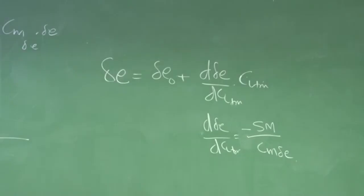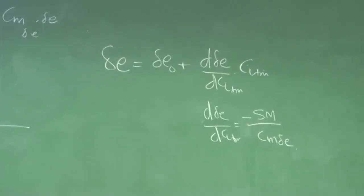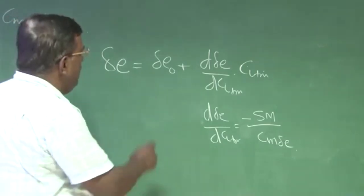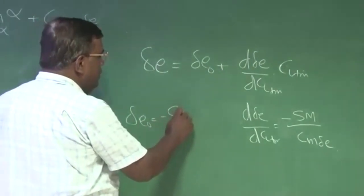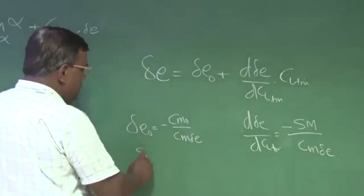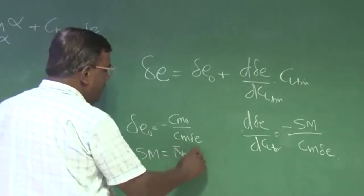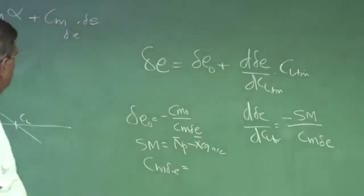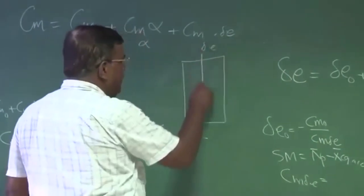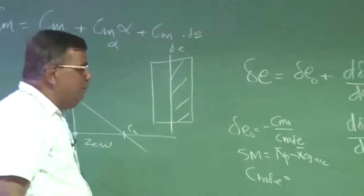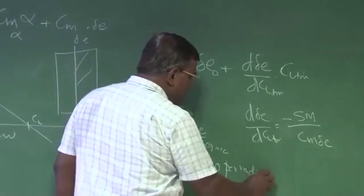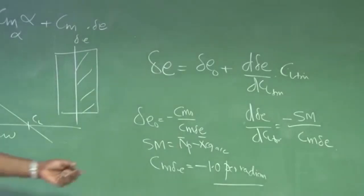Where d delta E by dCL trim is nothing but minus static margin by CM delta E. This is a linear graph with assumptions which are well known. You must refer to my class on aircraft stability and control, but this linear variation is quite good in terms of getting hang of initial numbers. Delta E0 is minus CM0 by CM delta E. And static margin you know - neutral point minus CG of the aircraft. CM delta E you can always find out if you know what percentage of the horizontal tail is elevator. Typical value for a normal airplane will be order of minus 1.0 per radian. I'm giving this number because we are at a conceptual stage.